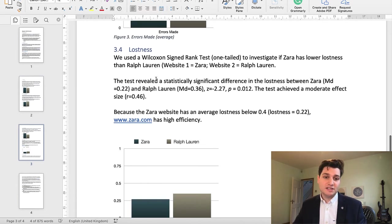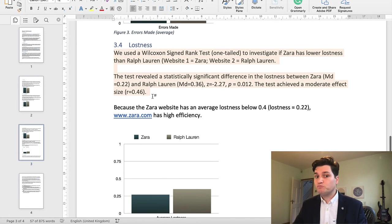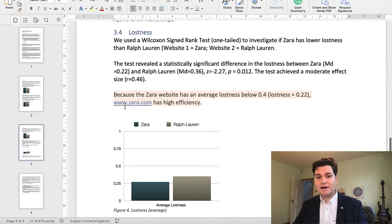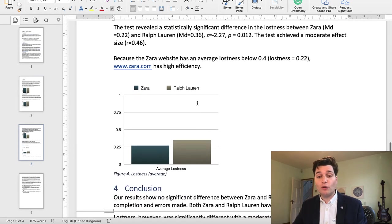And then the lostness is more interesting because we have a significant difference and achieved a moderate effect size. That's good. So we know that's how things are. Then we put a slight interpretation on this about Zara having high efficiency because it's below 0.4. So it's all good.